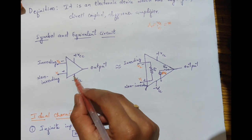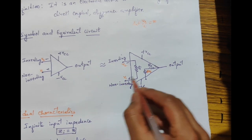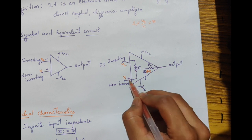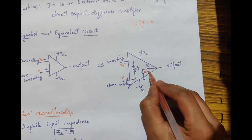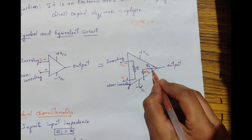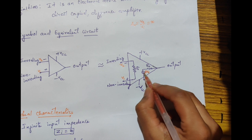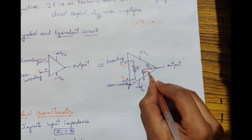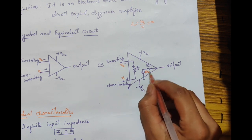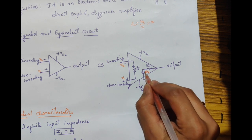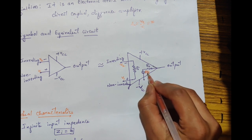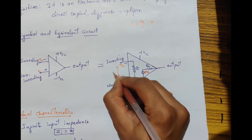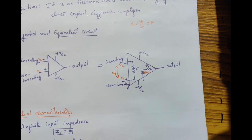Writing the equivalent circuit for the same operational amplifier: it has an input resistance between the two input terminals, one output resistance at the output terminal, and a voltage source at the output. That voltage source is the open loop gain A multiplied by VD, where VD is the difference voltage V1 minus V2.